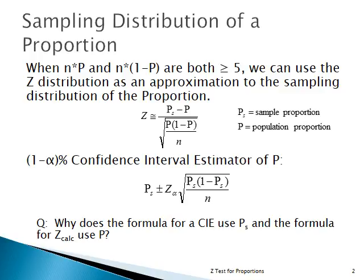Why is that? If we're doing a confidence interval estimator, we're trying to estimate the population parameter. That means we are not making any assumptions about it — we have no claims, no hypotheses. We don't even know enough to make a guess about P. All we have is the data from the sample, so we use the sample proportion all the way through.